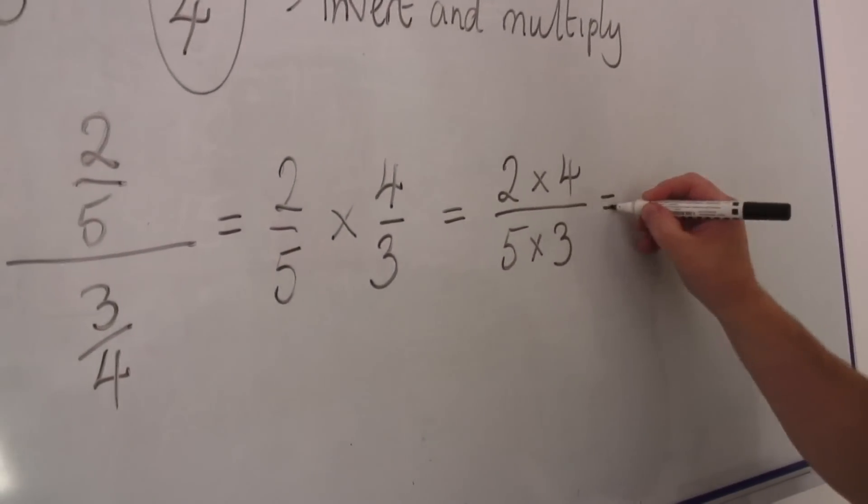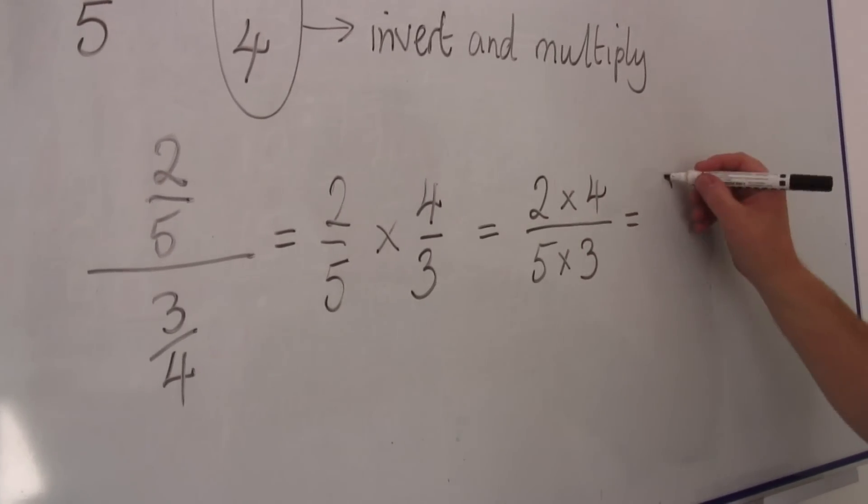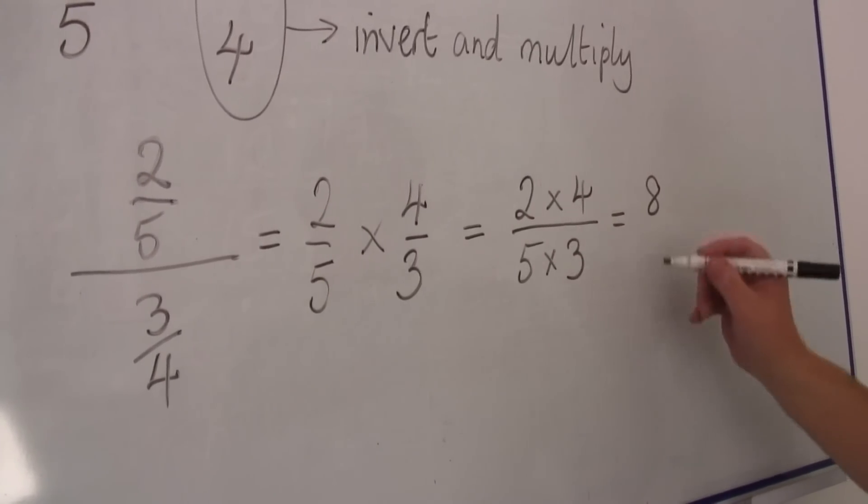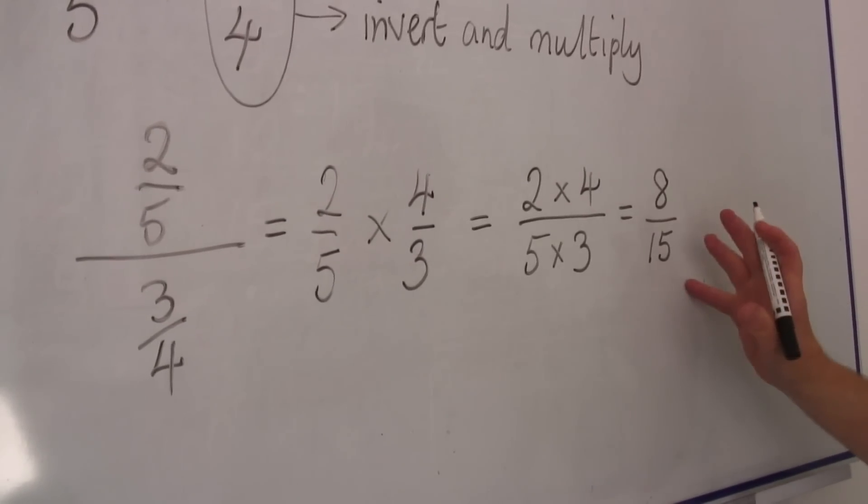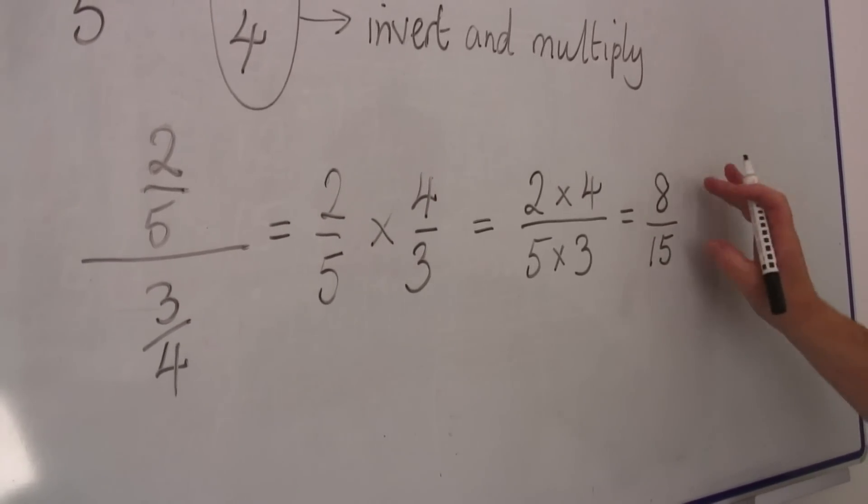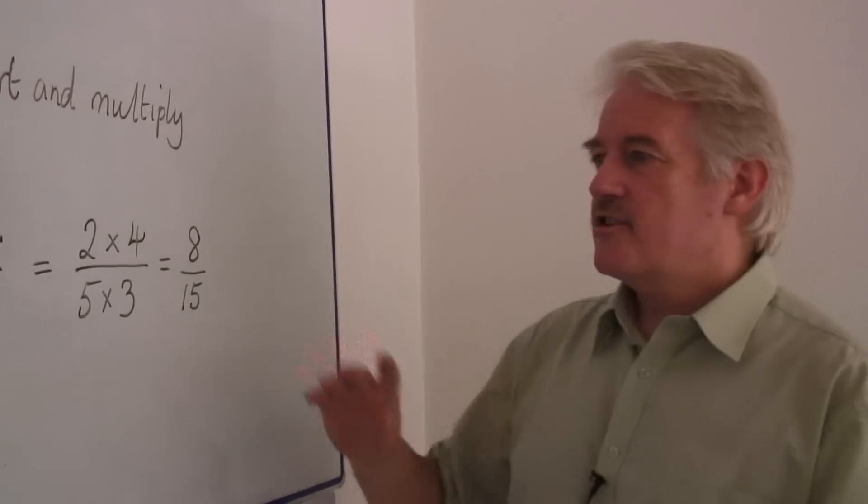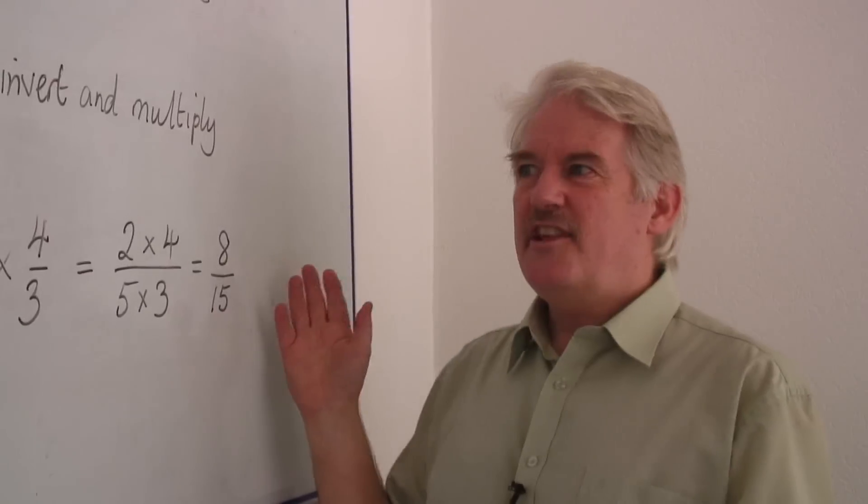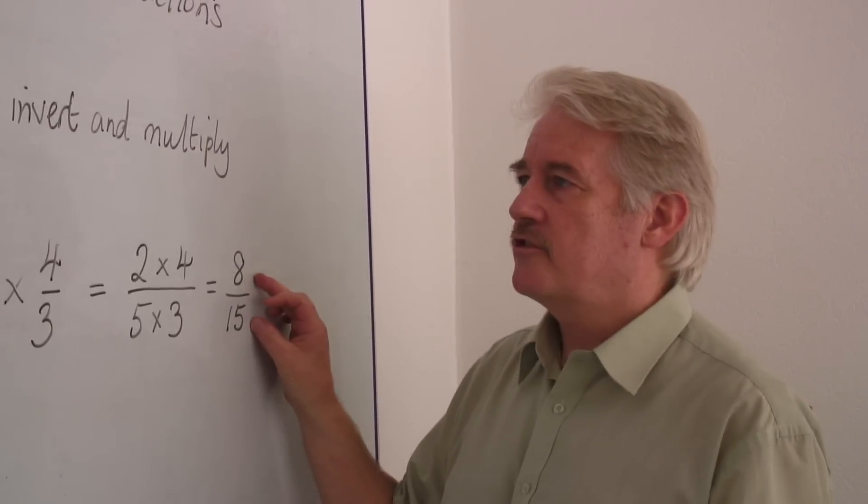And that will give us our final expression. Two times four is eight, five times three, fifteen. We can't reduce that anymore, so the answer is eight fifteenths. It doesn't look like a simple answer, but the answer really is very simple because we've reduced it to a simple fraction.